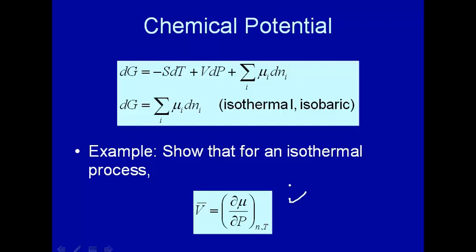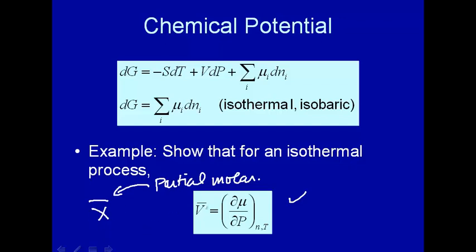We want to show that for an isothermal process, the partial molar volume — if you have some quantity say X with a bar above it, that bar means partial molar, meaning you've taken the derivative of X with respect to number of moles — is how chemical potential changes with pressure at constant n and T.